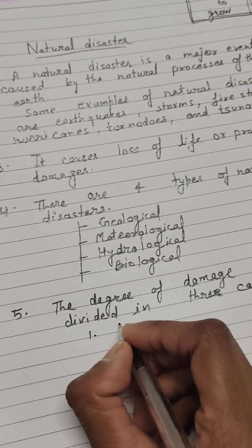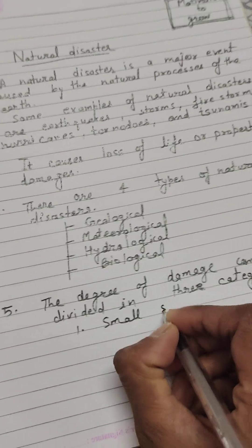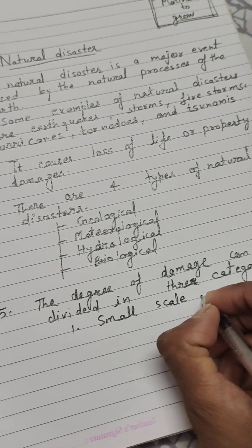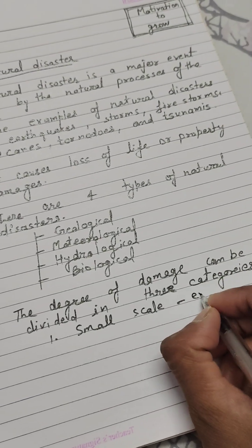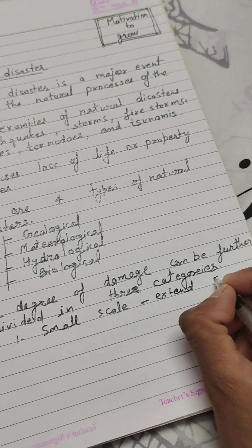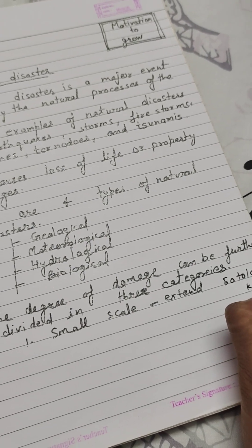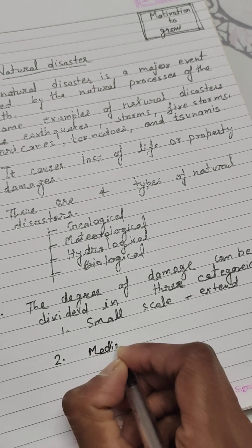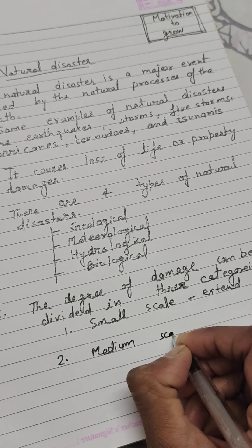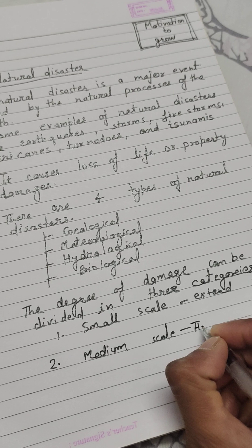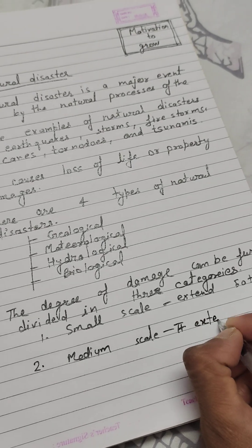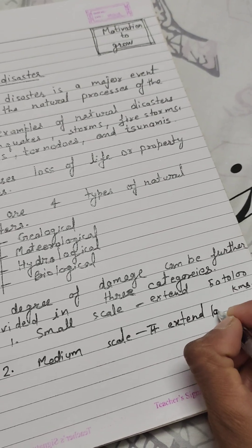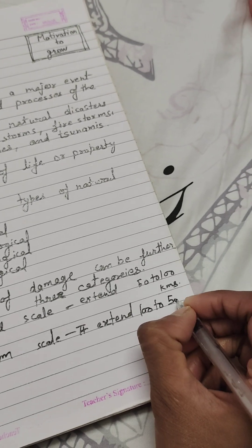One, small scale extends 5 to 200 kilometers. Second is, medium scale. It extends 100 to 500 kilometers.